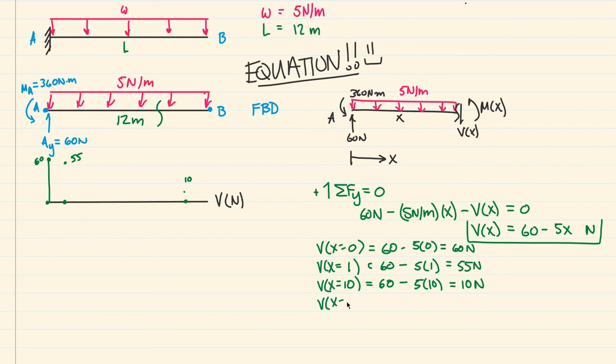And finally, how about at the very end? x = 12. Well, 60 - 5(12) = 0, because 5 times 12 is 60, and 60 - 60 is zero newtons. So it closes out right there at zero.